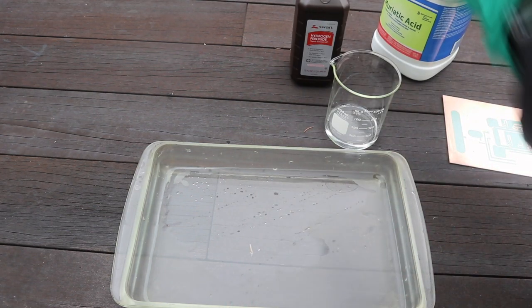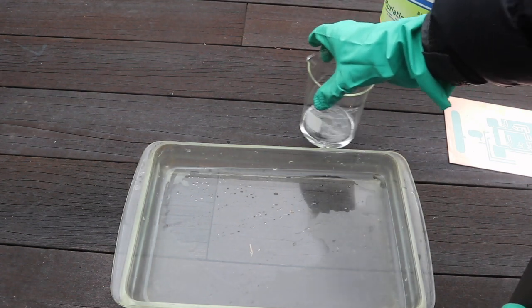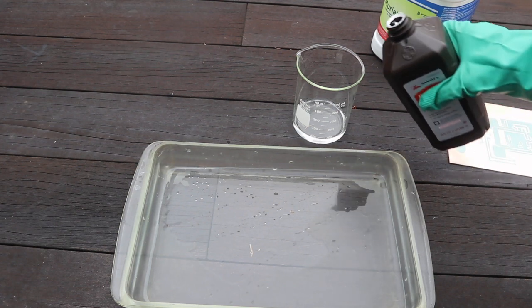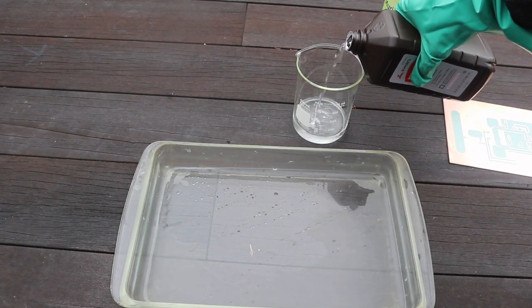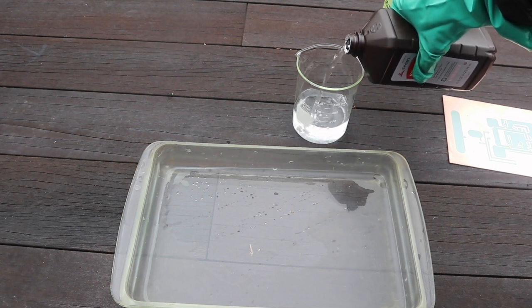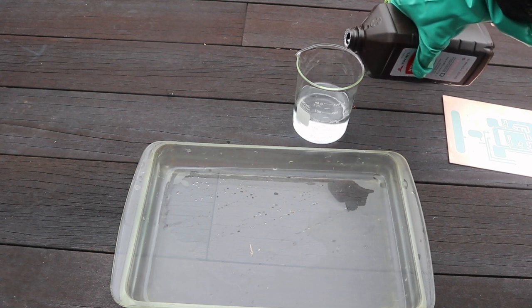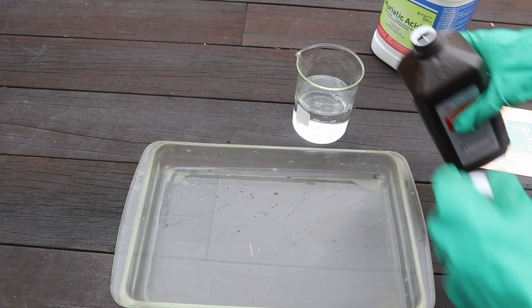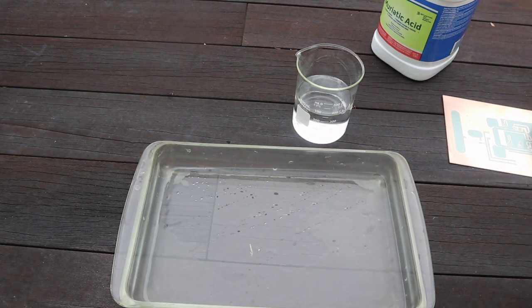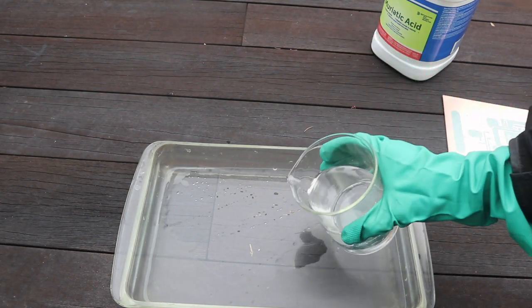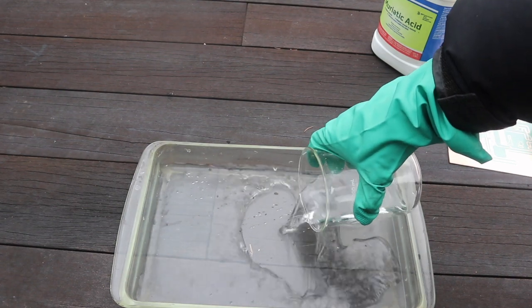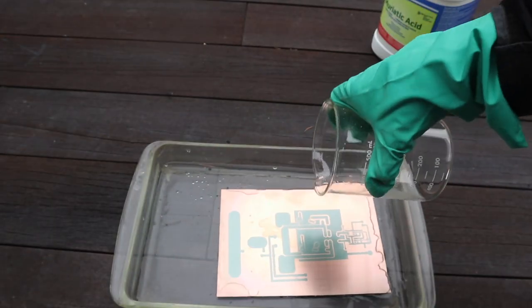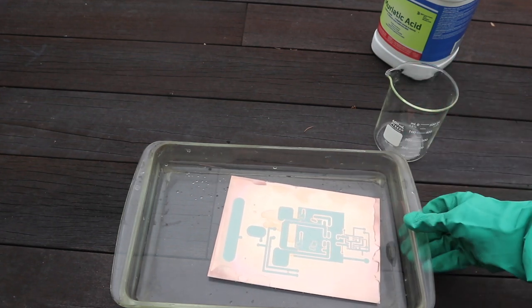Be very careful with the acid. So that's 100 milliliters of hydrochloric acid, 200, 300 there. Almost 3 parts hydrogen peroxide to one part hydrochloric acid.